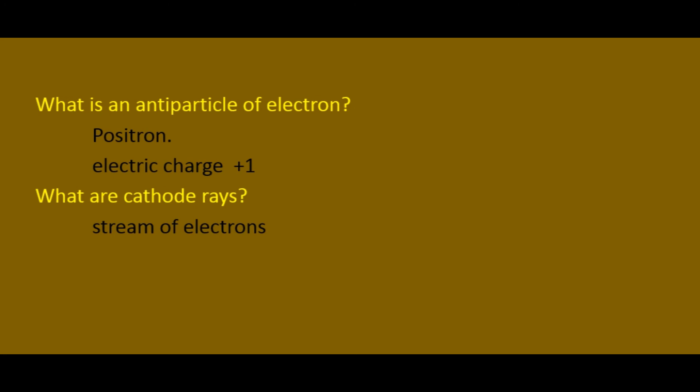What is the antiparticle of an electron? The antiparticle of an electron is called the positron. The positron has the same mass and all other properties equal to the electron, but the positron's electric charge is plus one, while the electron's electric charge is minus one. So the electron and positron differ only in their electric charge value.